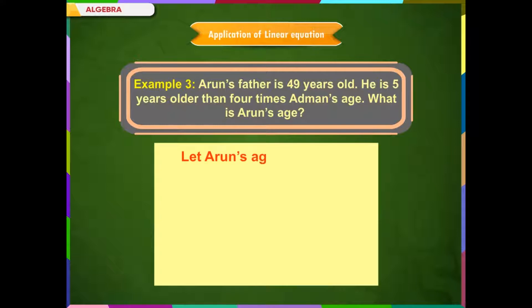Let Arun's age be x. Then, his father's age is equal to 4x plus 5. According to the question, 4x plus 5 is equal to 49.